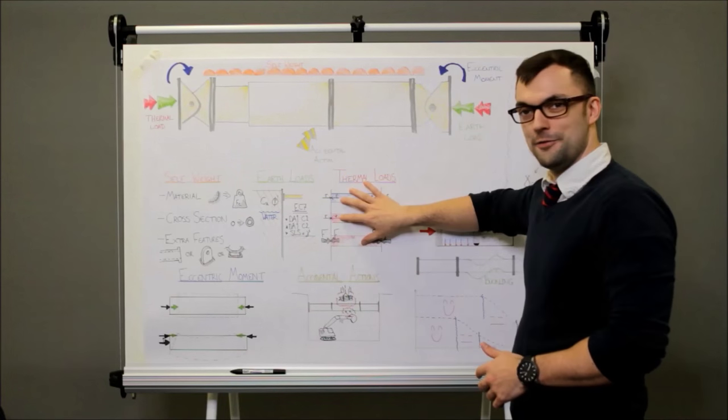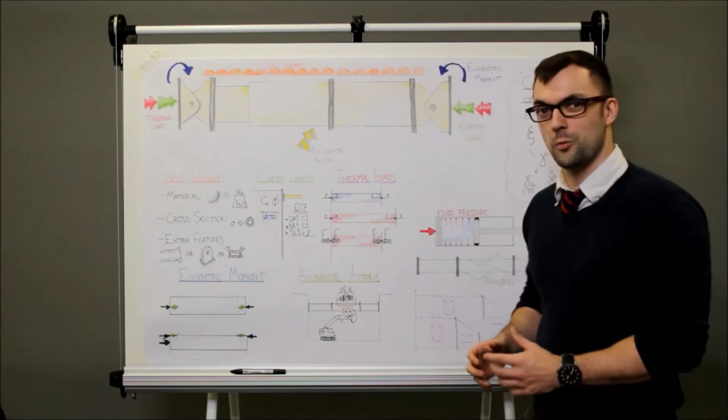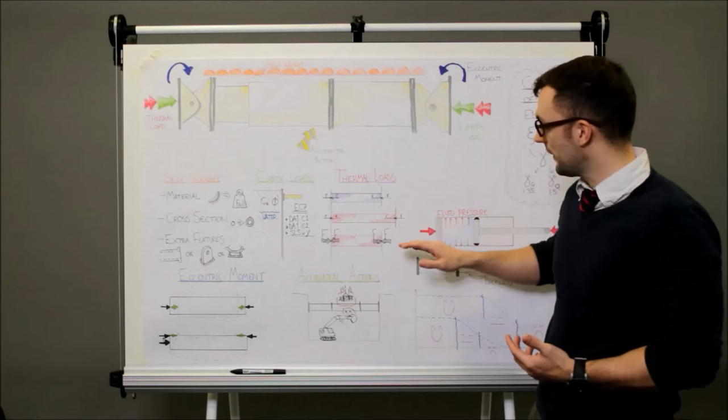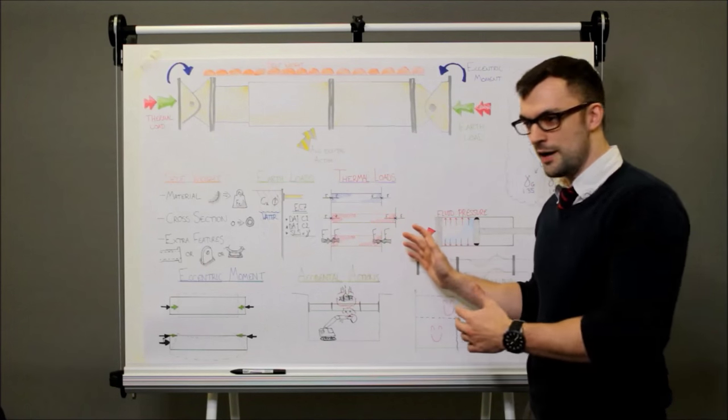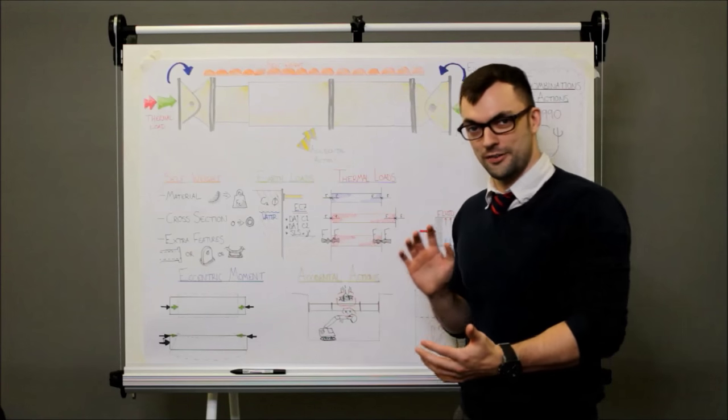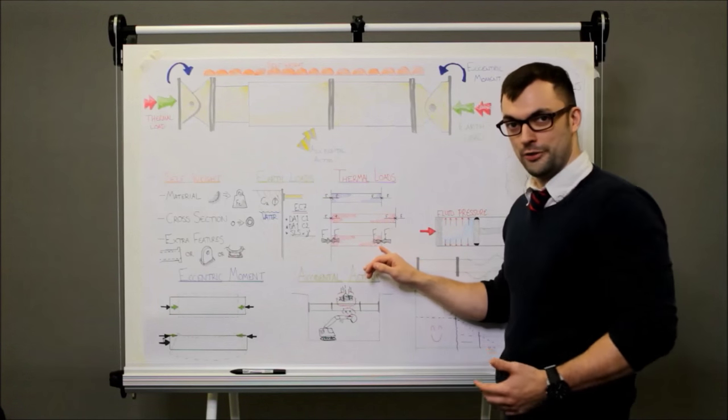The next biggest load we'll have is a thermal load. We have a large lump of steel in the ground here and when it gets warm it wants to expand. Because there's earth on either side it stops it from expanding and it holds it back. So if you imagine allowing it to expand and then pressing it back in again how much force it would take to compress that prop back to its original length. That's the extra load that you get.